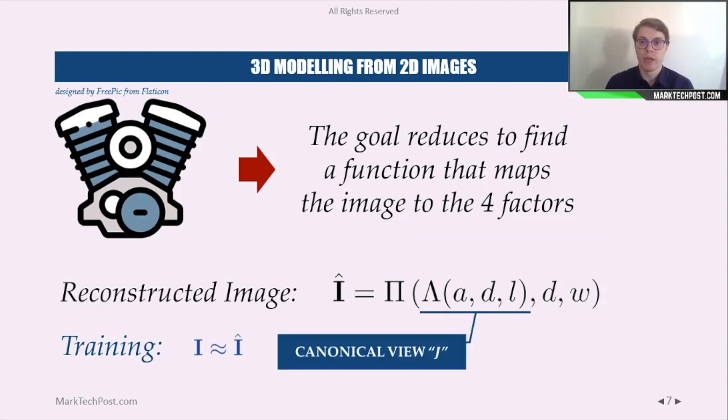The output of the lighting function is said to be a shaded canonical view. In the paper it is indicated with the letter J.